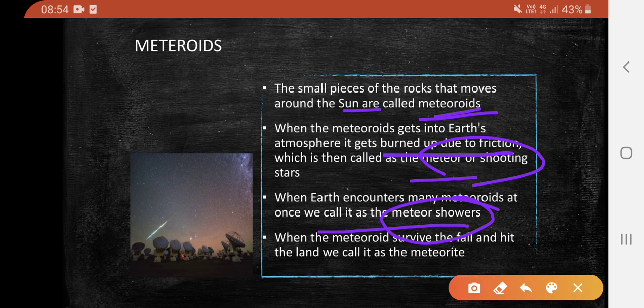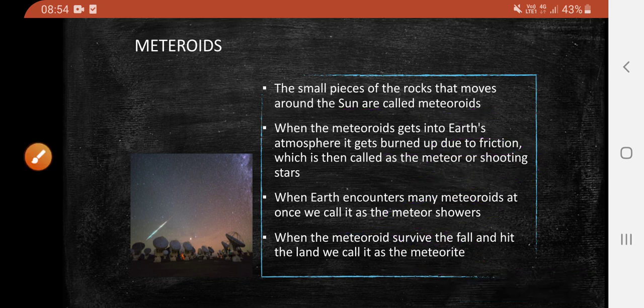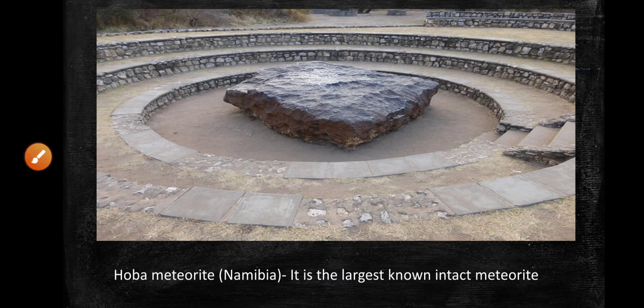When a meteoroid survives the fall and hits the land, we call it a meteorite. This is a picture of the HOBA meteorite found in Namibia. It is the largest known impact meteorite found on Earth.